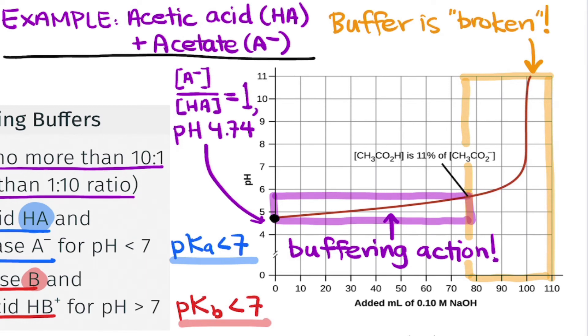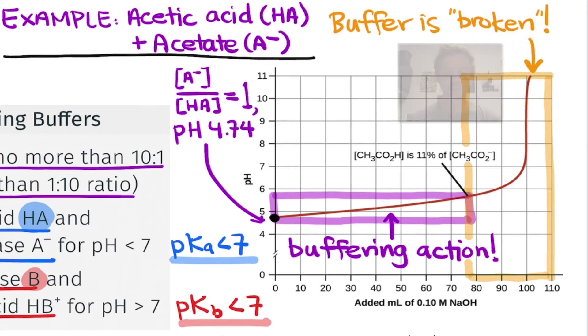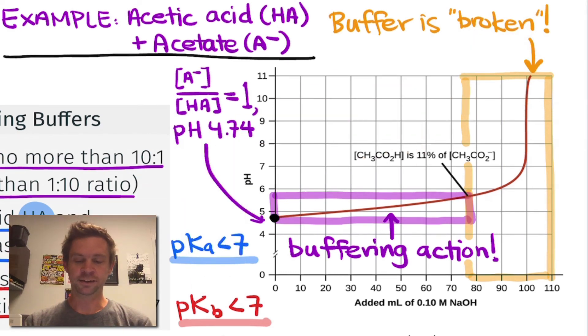If you think about going in the opposite direction from right to left on this curve, adding hydronium would actually decrease the pH rapidly within this region. So buffering action is broken both ways. This 11% figure is interesting.